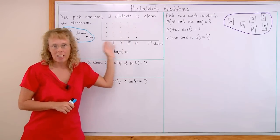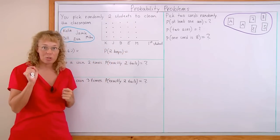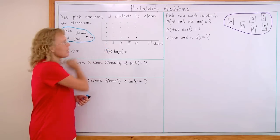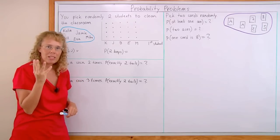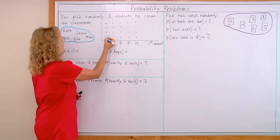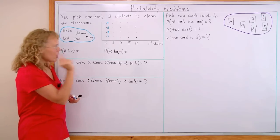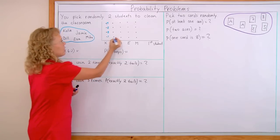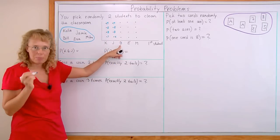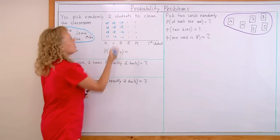We're going to use this chart to help us with the problem. These letters signify the first student that would be picked. For example, if I pick Katie as the first student, then I have four other possibilities for the second student — Jamie, Bill, Eva, or Mike. Now if the first student is Jamie, then the second one could be Katie, Bill, Eva, or Mike.